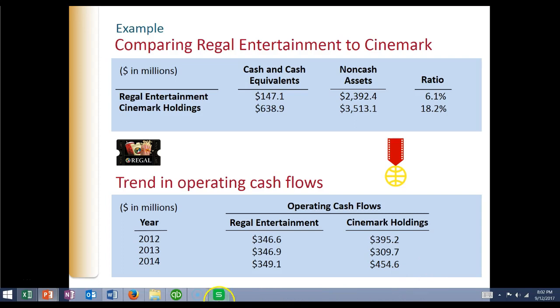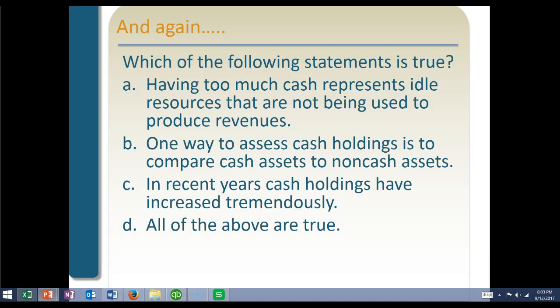Looking over the period of time, their operating cash flows are pretty consistent. Regal's sitting at around the $350 million mark, while Cinemark is at $390 million and then jumps up to $638 million. Which of the following statements is true? A — having too much cash can represent idle resources not being used to produce revenues: true. One way to assess cash holdings is to compare cash assets to non-cash assets: true. In recent years cash holdings have increased tremendously: also true. All of the above are true.